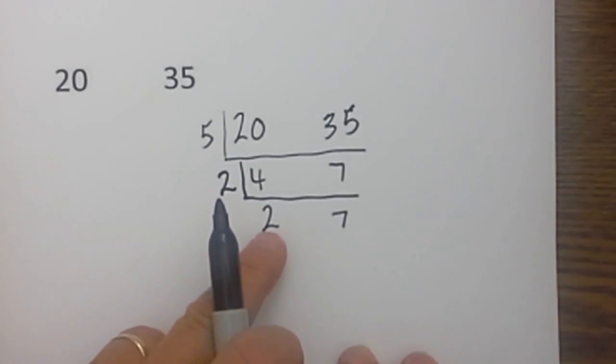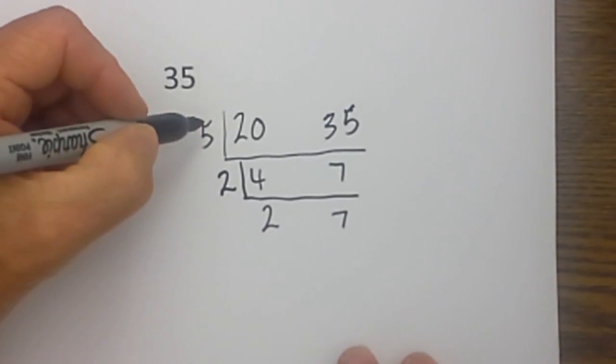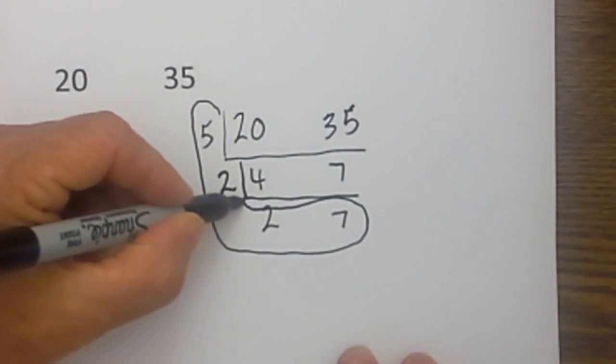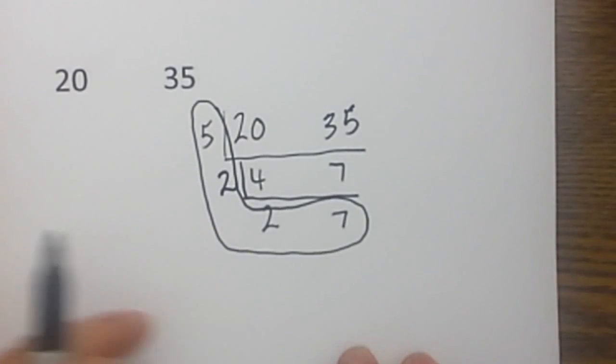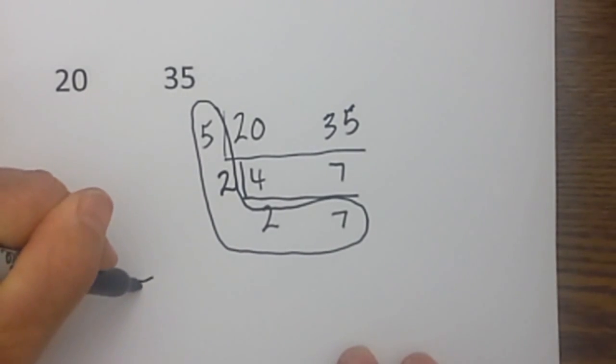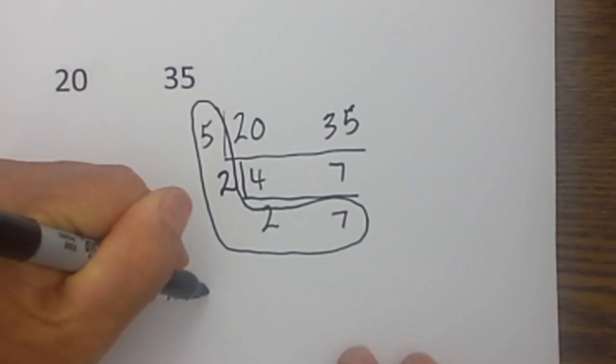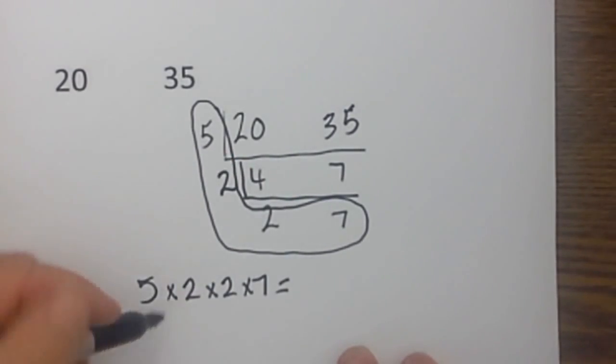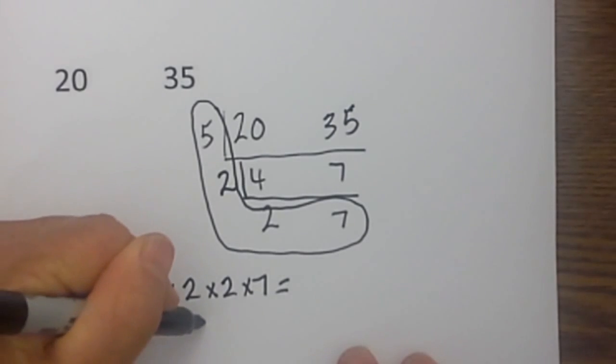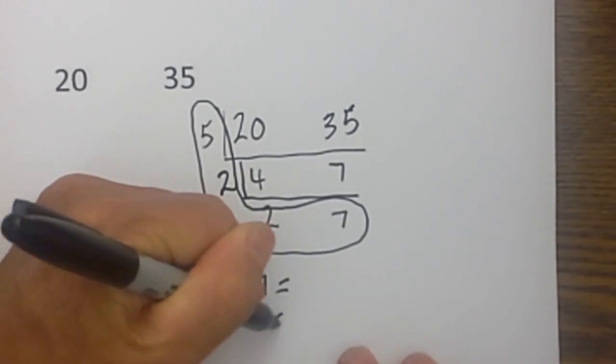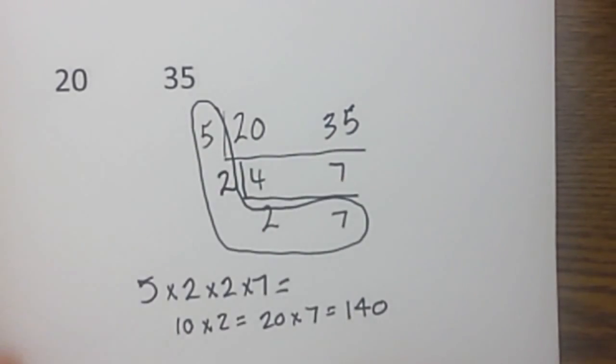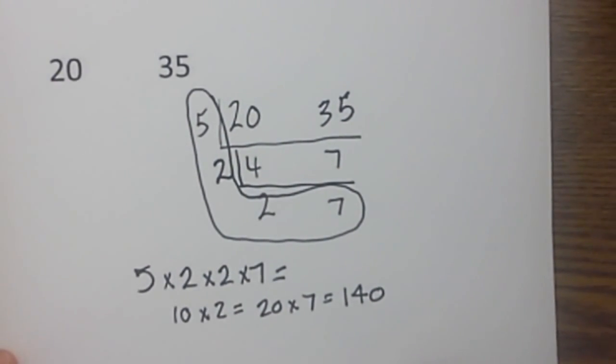At this time I am finished because I have 2 prime numbers at the end. I then just multiply the numbers on the outside, so it will be 5 times 2 times 2 times 7. And when you multiply that together that gives you 10 times 2 is 20, and 20 times 7 is 140. So there we go using the ladder method.